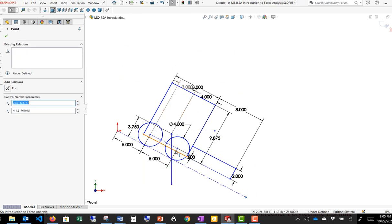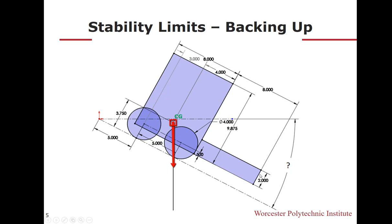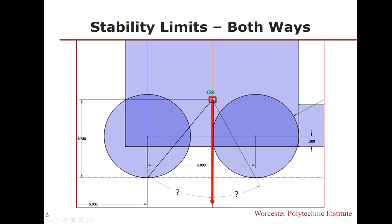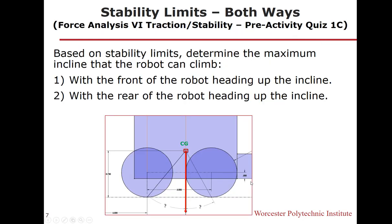You could also move this down until the line is passing through—sometimes students make the mistake of passing it through the axle, but you want to pass it down to the point of contact on the wheel. You can draw from the center of mass down to what we call the polygon of contact—from the center of mass down to these two points and calculate these angles. This angle here will be the maximum angle you could climb based on stability if you're driving forwards up the incline, and if you're driving backwards, it would be this angle right here.